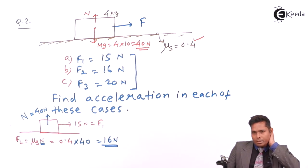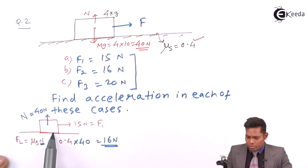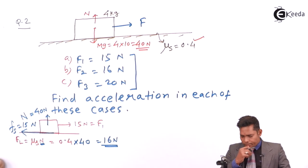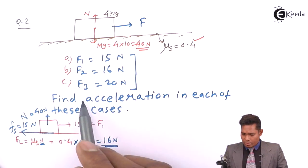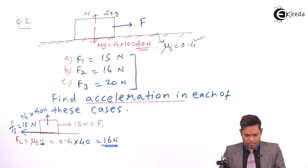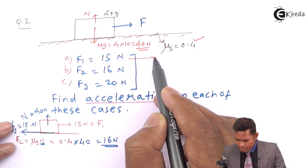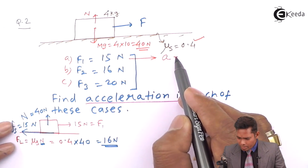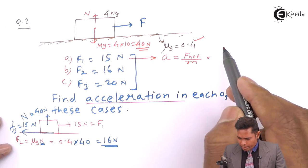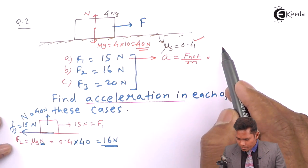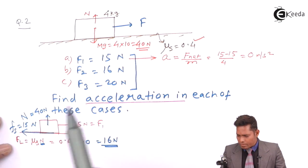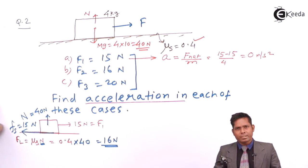The maximum friction is 16 N, but the friction that actually acts depends on the external force. Since the external force is 15 N, the static friction Fs equals 15 N. Looking at the free body diagram, we have 15 N towards the right and 15 N towards the left. So acceleration = (15 − 15) / 4 = 0 m/s². The body is not moving — friction prevents its motion.